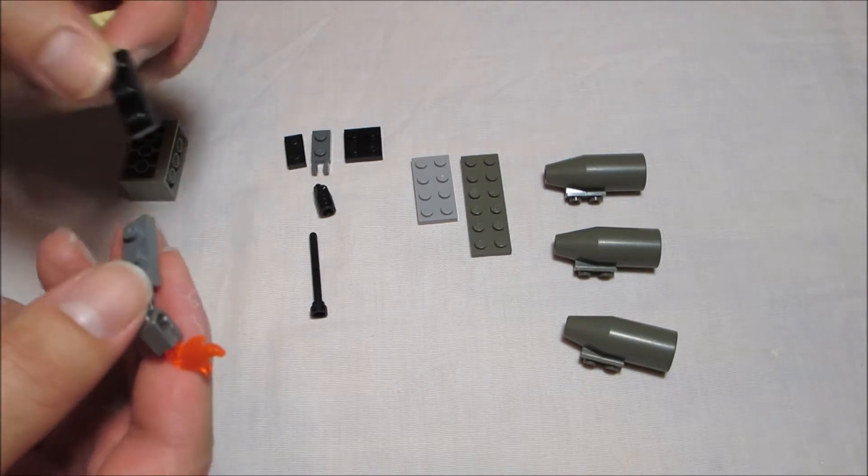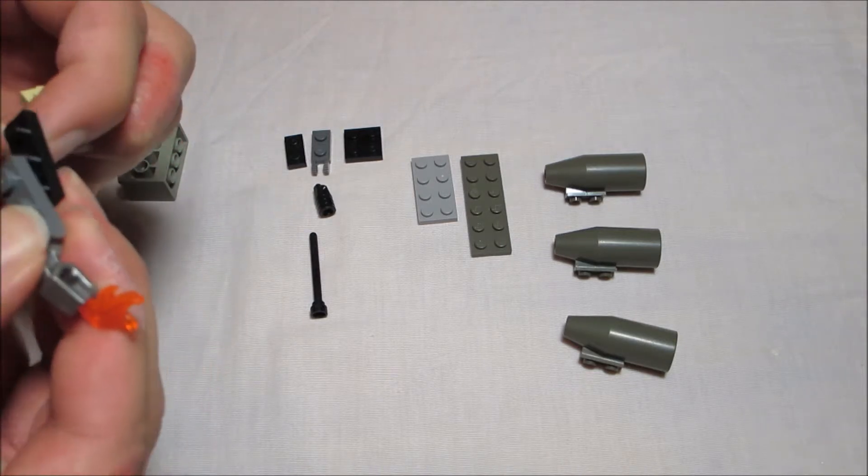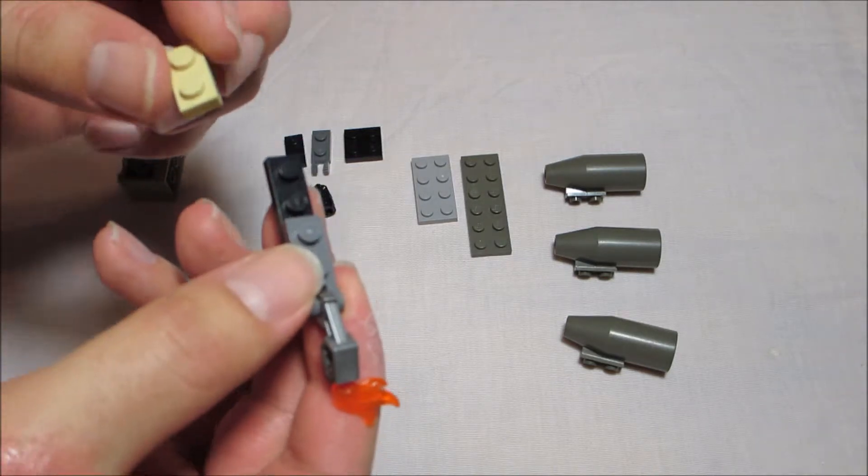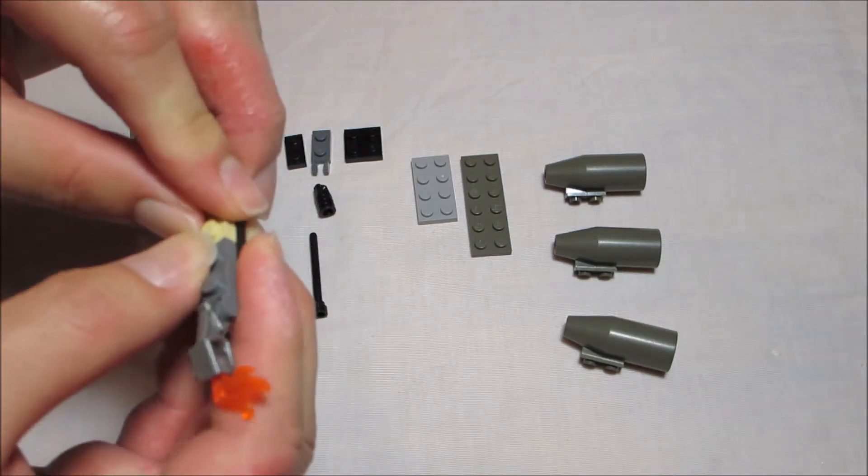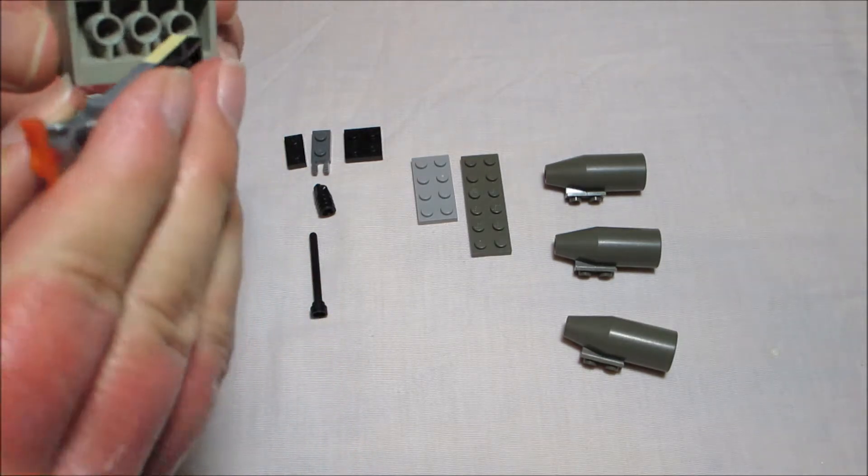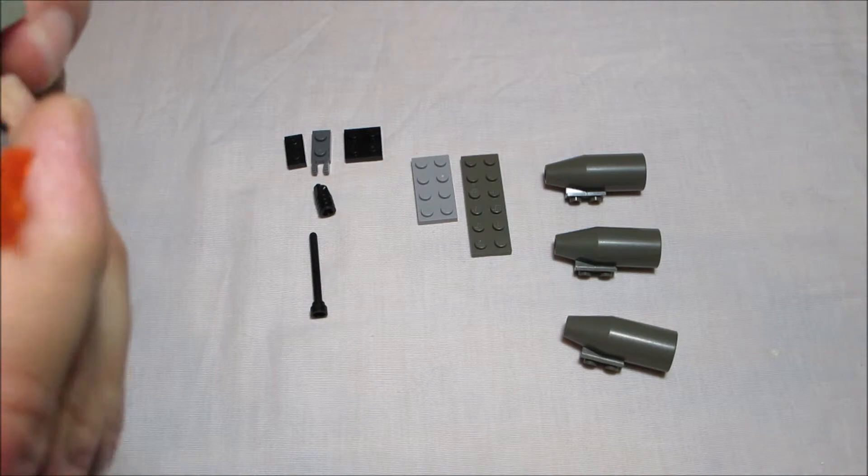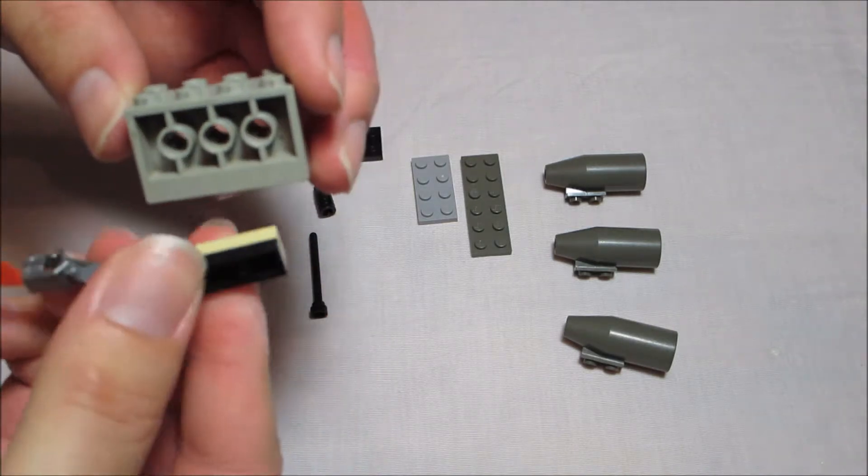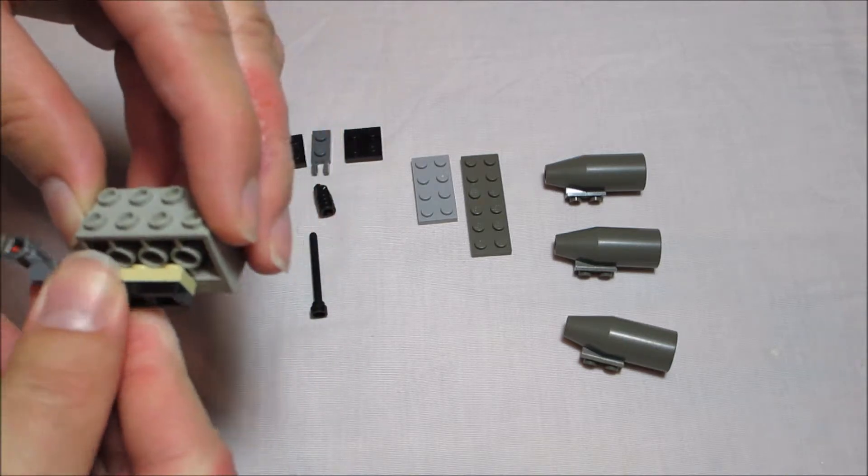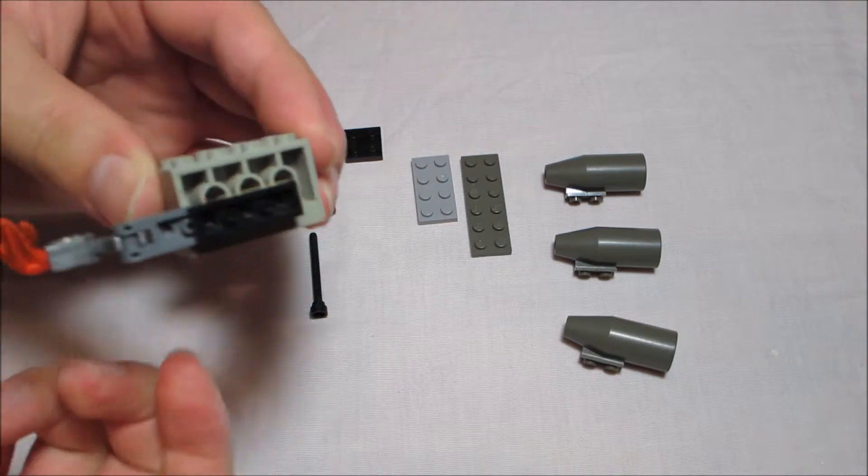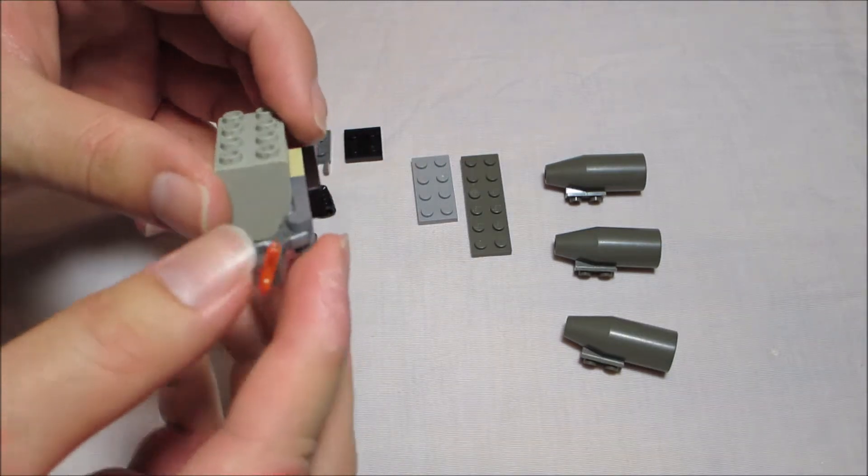Next we're going to use a 1x3 plate. That will go underneath and only clip one of the studs. The 1x2 plate will go on top of that. And we'll need another 2x4 with holes on each side. On the outside we're going to clip the flamethrower on the bottom part of the 2x4.